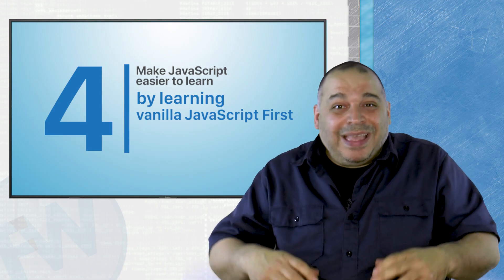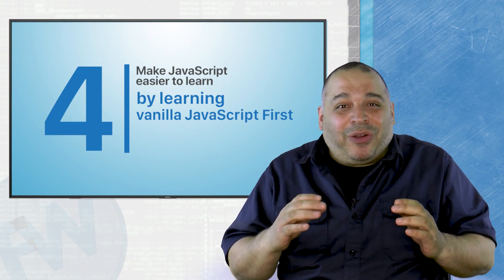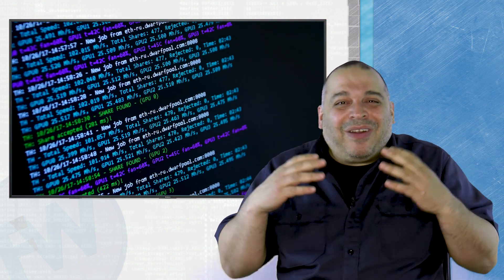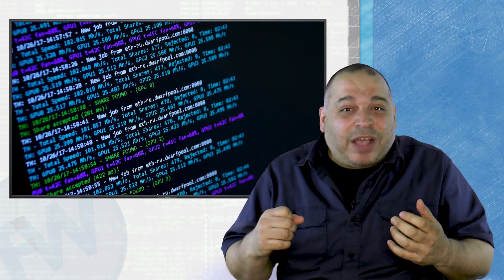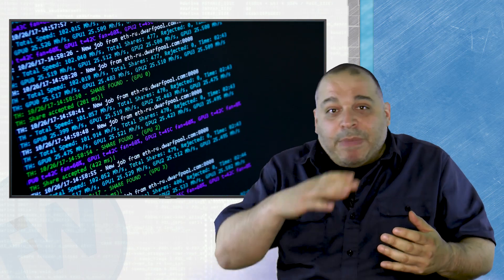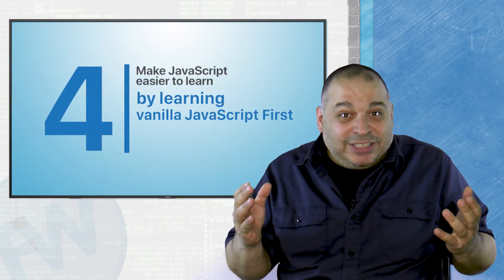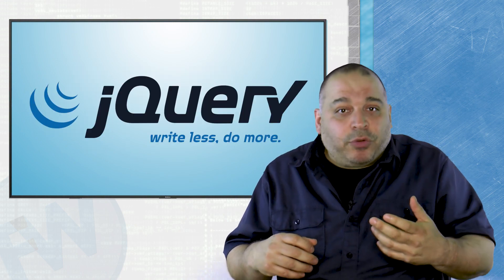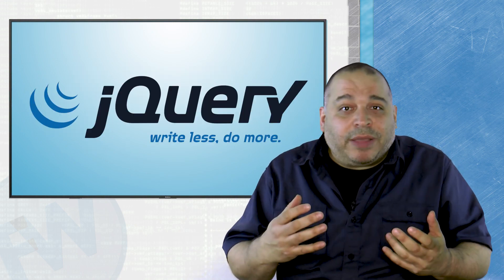Number four, make JavaScript easier to learn by learning vanilla JavaScript first. There are hundreds, maybe thousands of JavaScript libraries out there. Many are built to make JavaScript coding easier. For example, the jQuery library can compact a dozen or more lines of code into two or three commands.